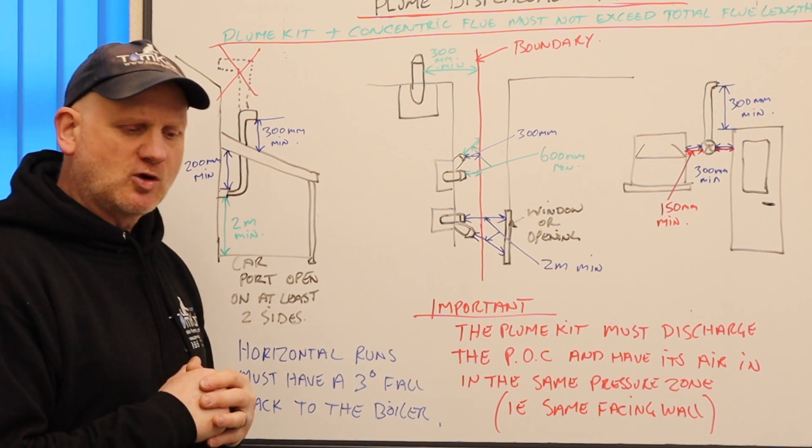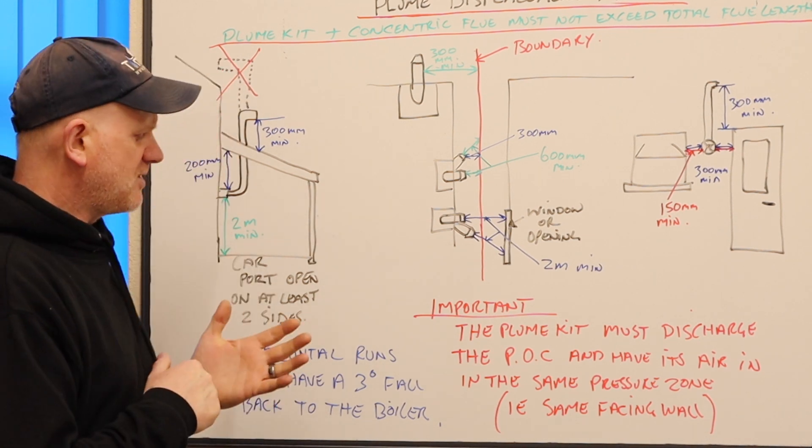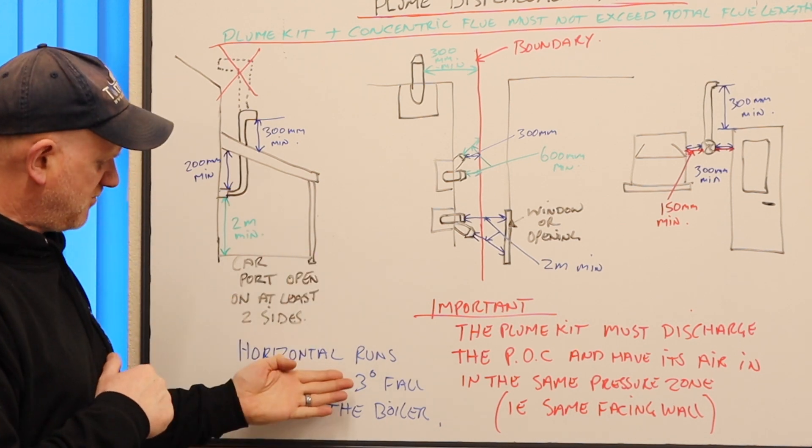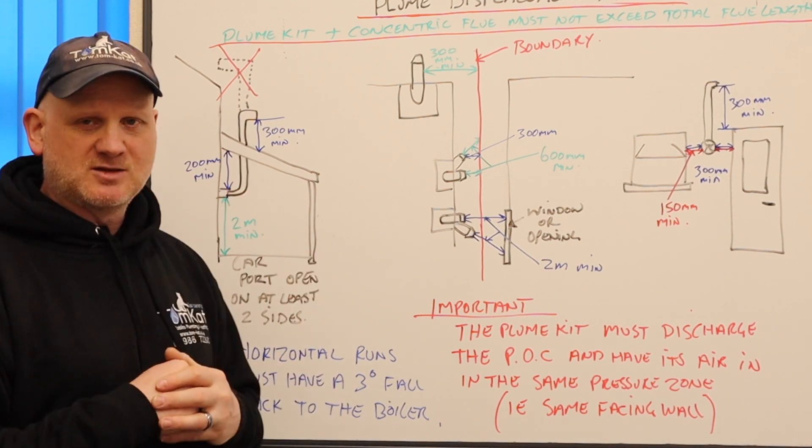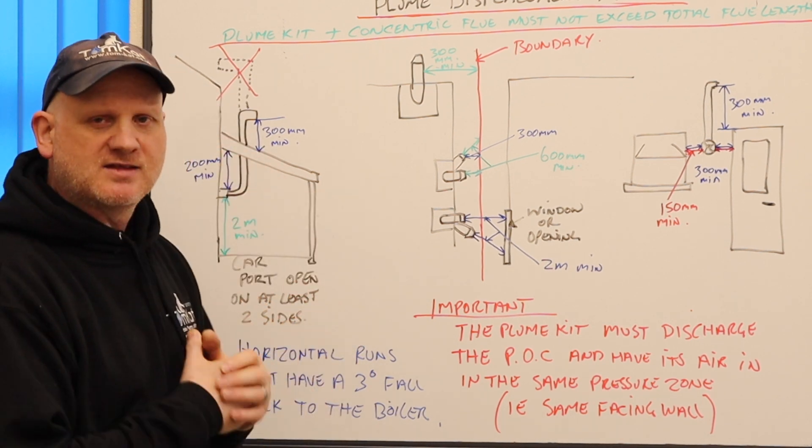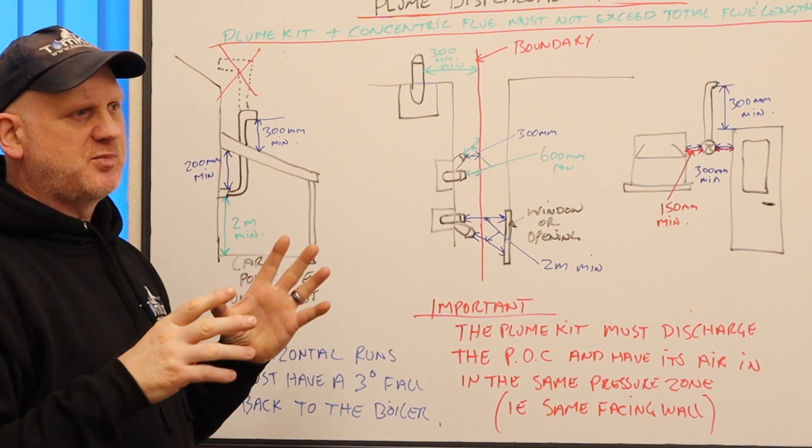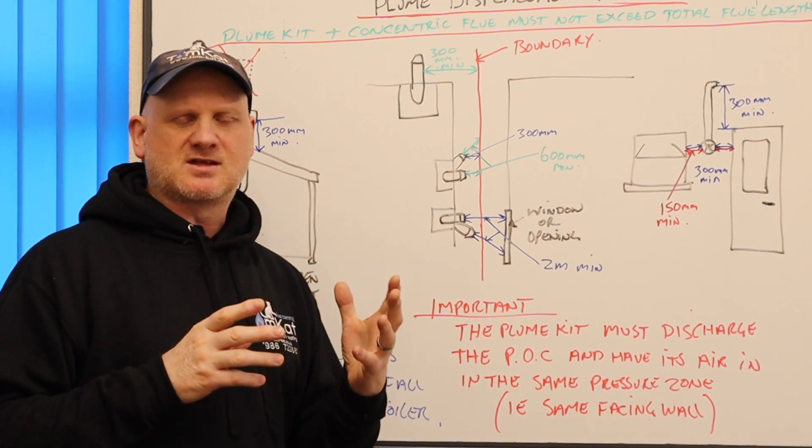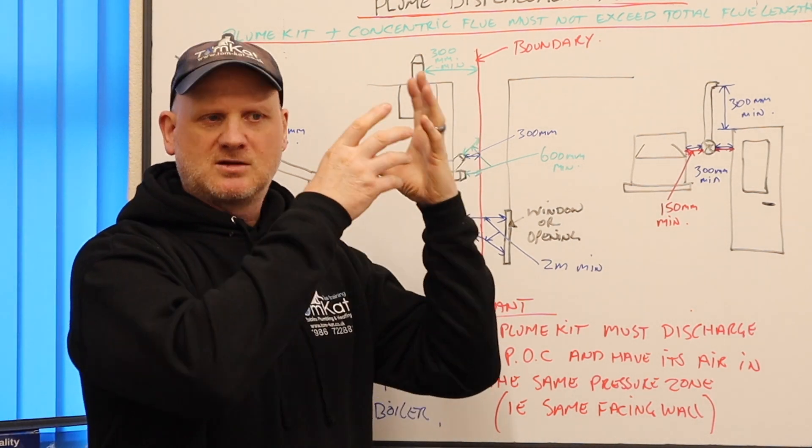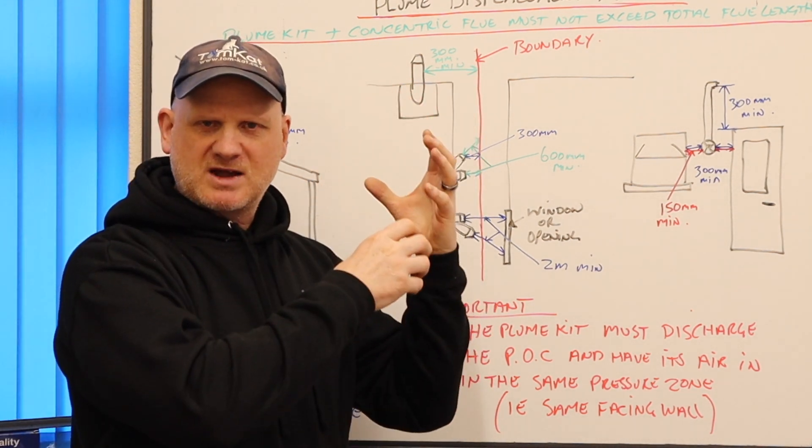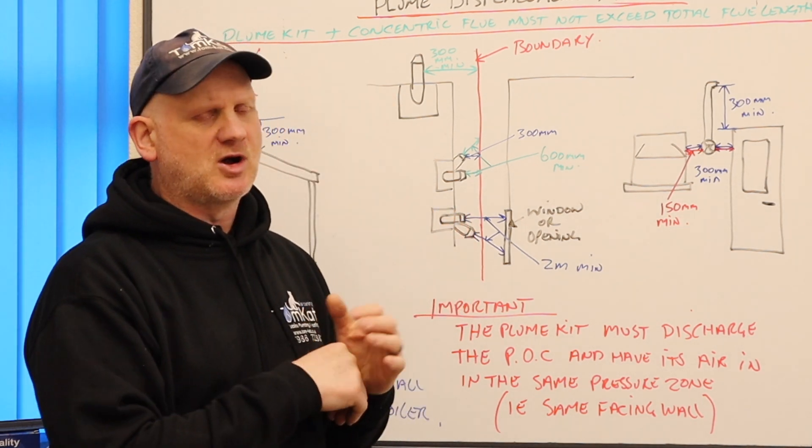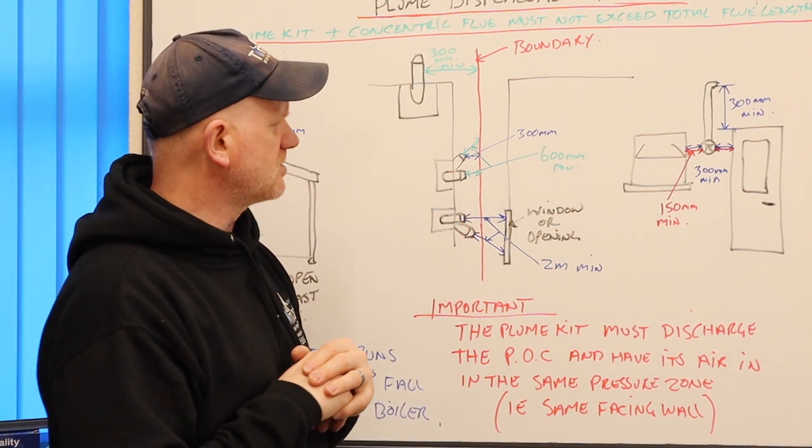Also, if we have any horizontal runs on this flue system, now it says between one and a half degrees to three degrees like I've put here falling back to the boiler because it needs the water to go back down the condensing drain. What this pluming kit does is basically because of its height it makes the condense go back to water again so most of it goes back down into the boiler rather than coming out as a pluming nuisance.